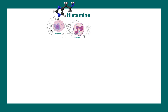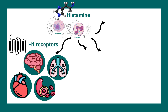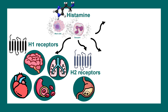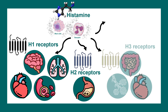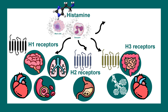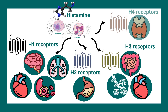Histamine works through histamine receptors, all of which are G protein-coupled receptors, also known as seven transmembrane domain receptors. H1 receptors are highly enriched in the brain, heart, blood vessels, and lungs. H2 receptors are predominantly present in the stomach lining. H3 receptors are present in the intestine, heart, and alveoli, while H4 receptors are present in the thyroid gland.